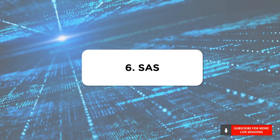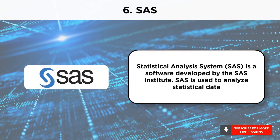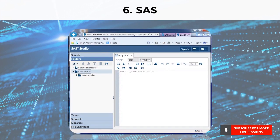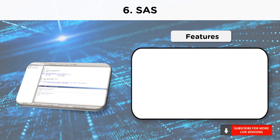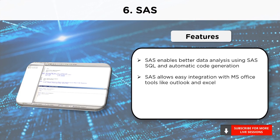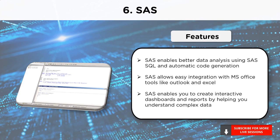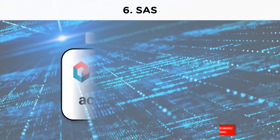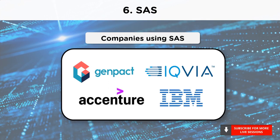We have SAS at number 6. SAS facilitates analysis, reporting and predictive modeling with the help of powerful visualizations and dashboards. In SAS, data is extracted and categorized which helps in identifying and analyzing data patterns. Using SAS, better analysis of data is achieved by using automatic code generation and SAS SQL. SAS allows you to access through Microsoft Office by letting you create reports and distribute them through it. SAS helps with an easy understanding of complex data and allows you to create interactive dashboards and reports. Companies using SAS include Genpact, IQVIA, Accenture and IBM, to name a few.